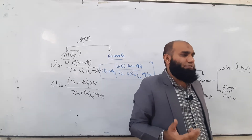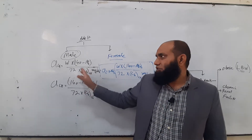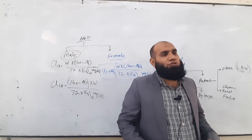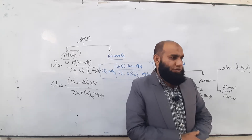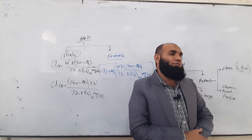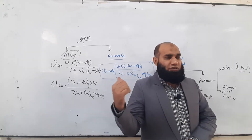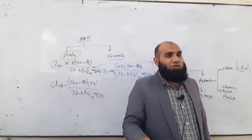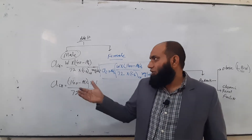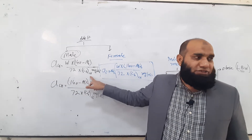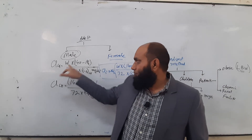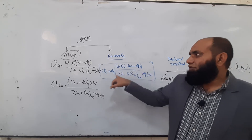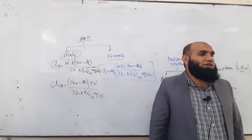For female creatinine clearance, the formula is: [weight × (140 − age) ÷ (72 × serum creatinine in mg/dL)] × 0.85. When calculating creatinine clearance for a female, we need her weight, age, and — if available — body surface area. We can also use 100 × BSA ÷ 1.73 to estimate the normal systemic creatinine concentration to insert into the formula.